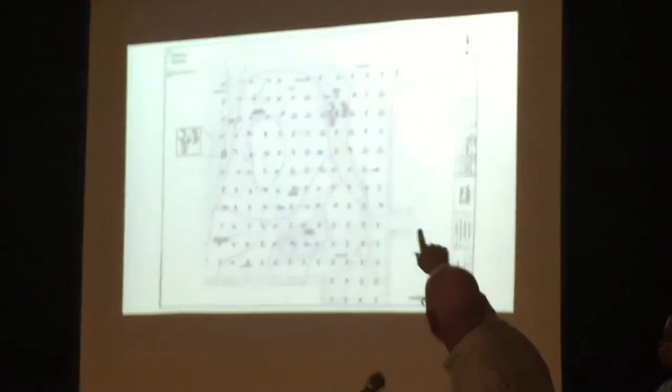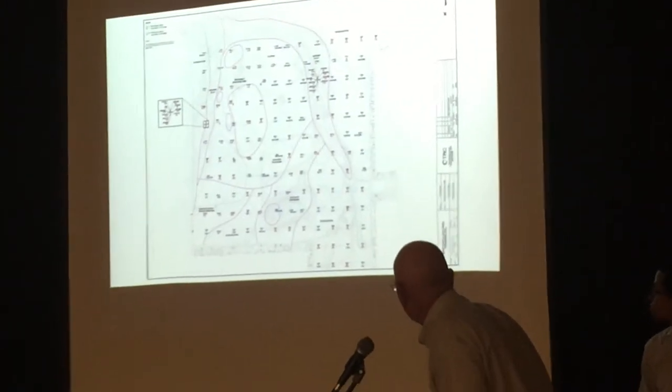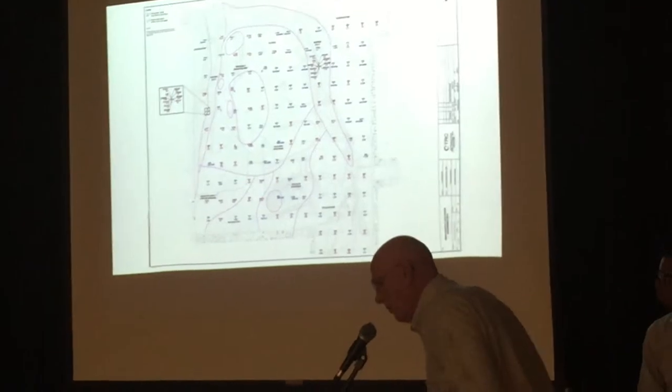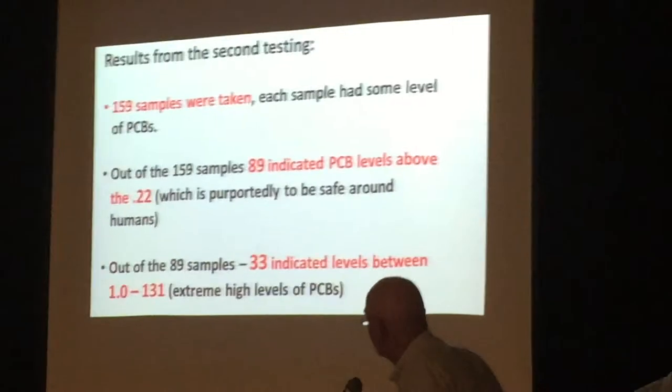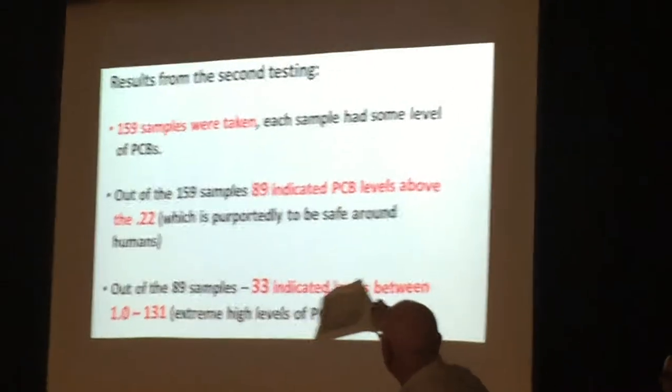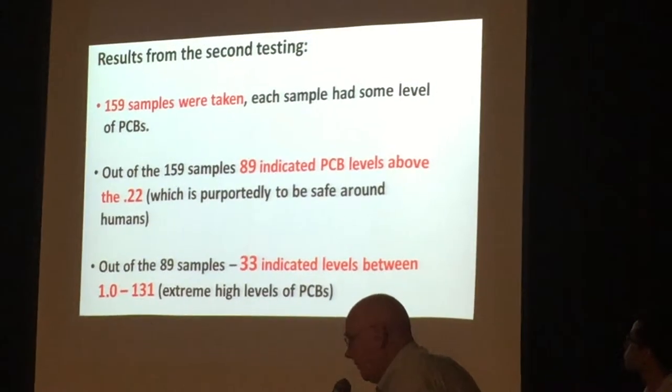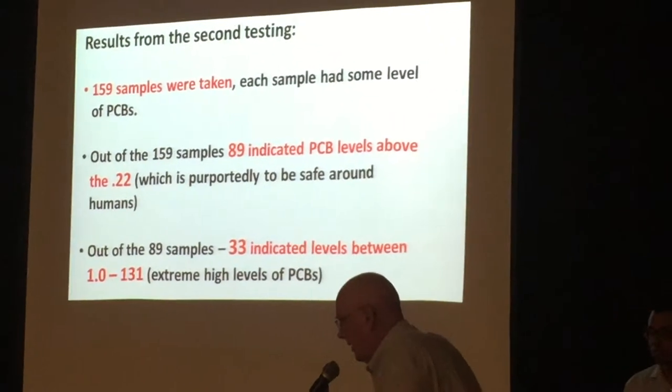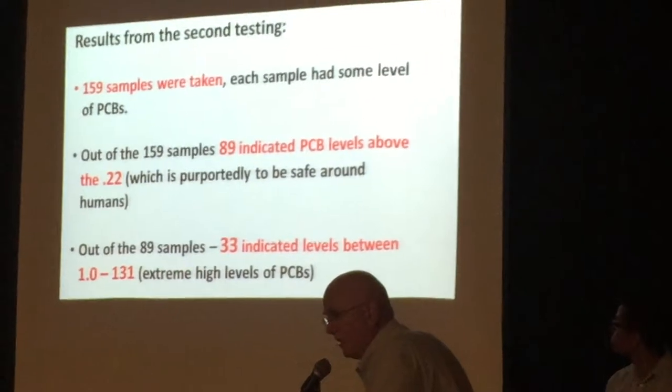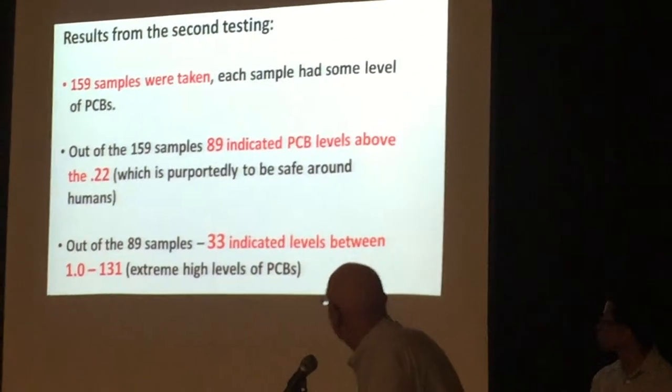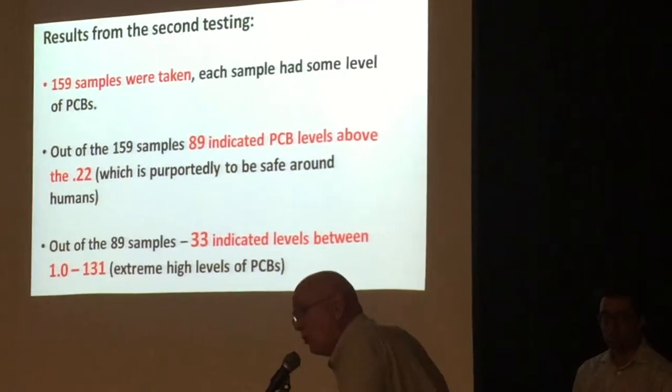This map just shows where all the samples were taken throughout the site. 159 samples were taken. Each sample has some level of PCBs. The county actually says there should be zero as the level for this. The federal government and the state took a number of 0.22.